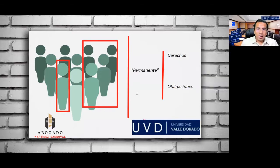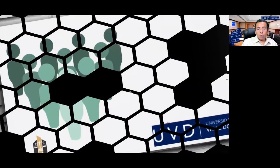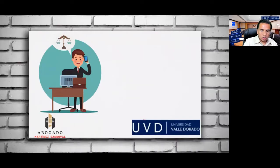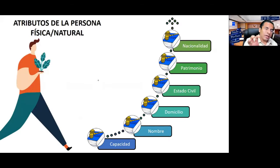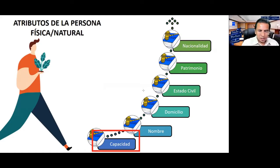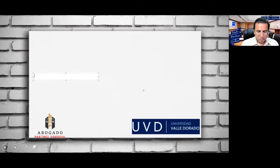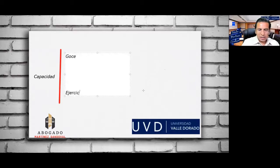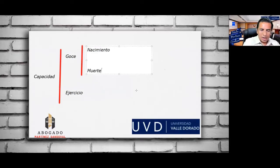La persona moral también es conocida como persona jurídica. Las personas físicas tienen atributos de la personalidad. La capacidad: hay dos tipos, la capacidad de goce —que adquirimos al nacimiento y la perdemos con nuestra muerte— y la capacidad de ejercicio, a partir de la mayoría de edad.